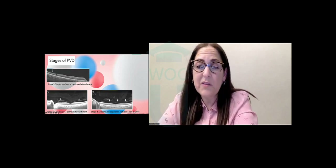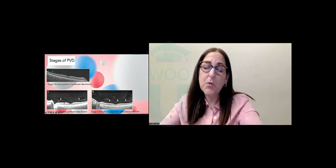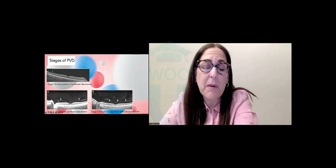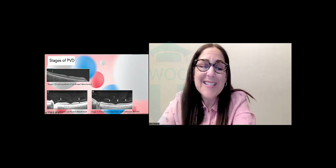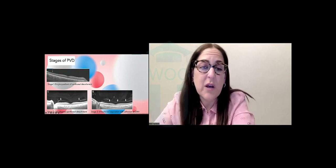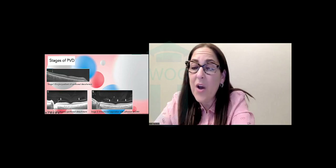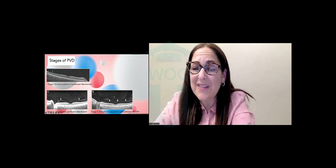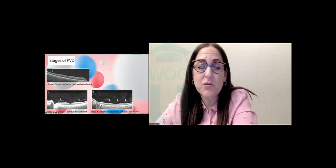In a stage two PVD, you can see that both sides of the fovea are beginning to lift up — both areas of the posterior hyaloid are lifting up off of the ILM. You're looking for this dark recess indicating separation between the posterior hyaloid and the inner limiting membrane. In a stage three, both sides of the posterior hyaloid have separated from the fovea and all that's still attached is the optic nerve head. In order to record a full PVD, you essentially have to have a complete detachment.